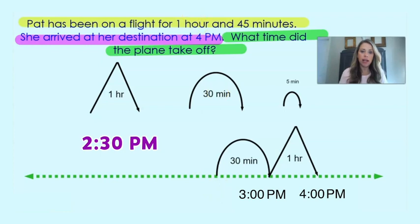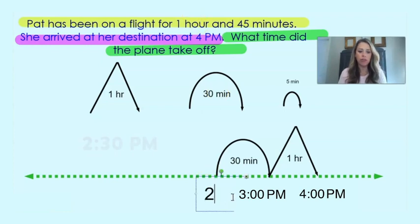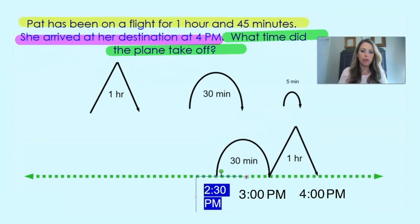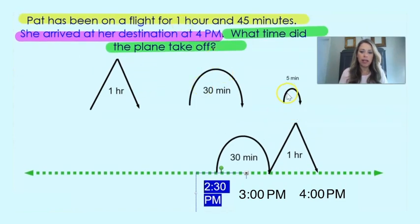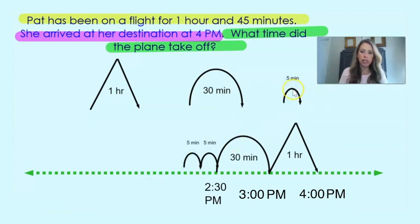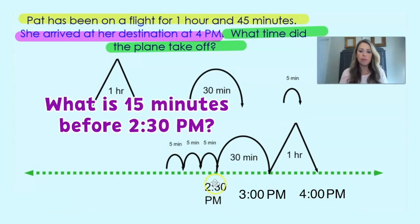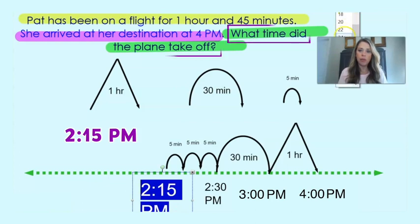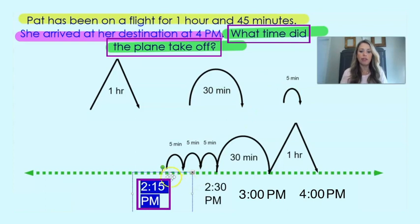So 2:30pm — and then we still have 15 more minutes to go. I'm going to use little 5-minute jumps to go backwards, so I know I need 3 of them. You could also just do one big 15-minute jump — whatever is easiest for you. But 15 minutes before 2:30pm would be 2:15pm. So we know then that the plane took off at 2:15pm.